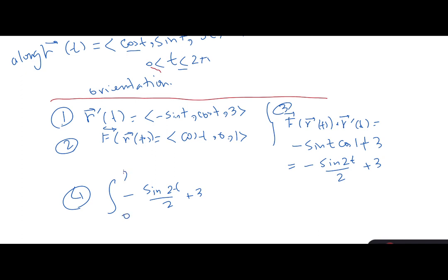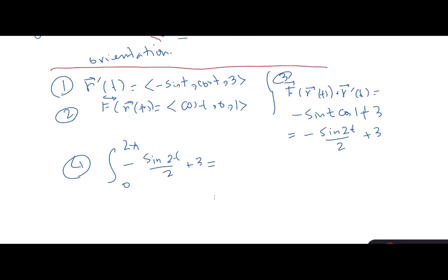So, integral from 0 to 2π: sine of 2T becomes cosine of 2T divided by 2, evaluated from 0 to 2π, plus 3T from 0 to 2π. The first term is going to be zero because it's a full rotation in the cosine.